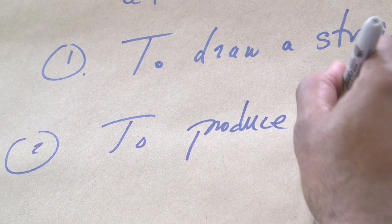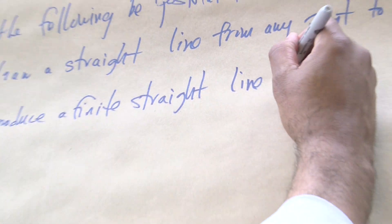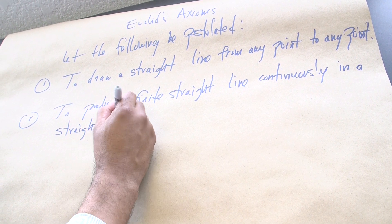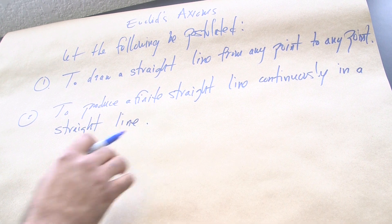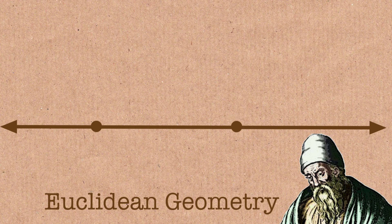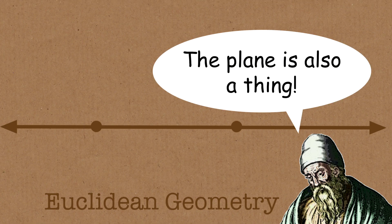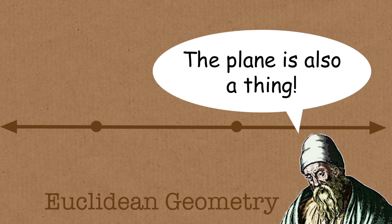Number two: to produce a finite straight line continuously in a straight line. This might seem a little unclear — what's happening is that we're creating a plane. Think of a line segment; that's a finite straight line, and we're going to continuously move it in a straight line, that gives breadth. So we have from a line, moving it in a line, we get a plane. Now we've talked about points and lines, and we've created a plane — we can move to circles.